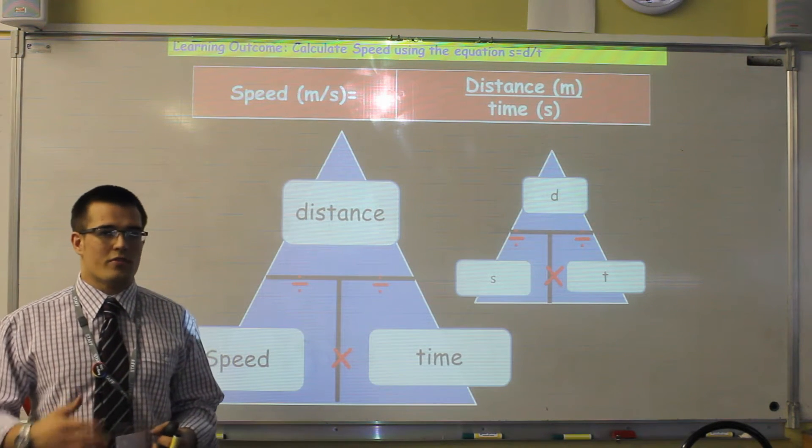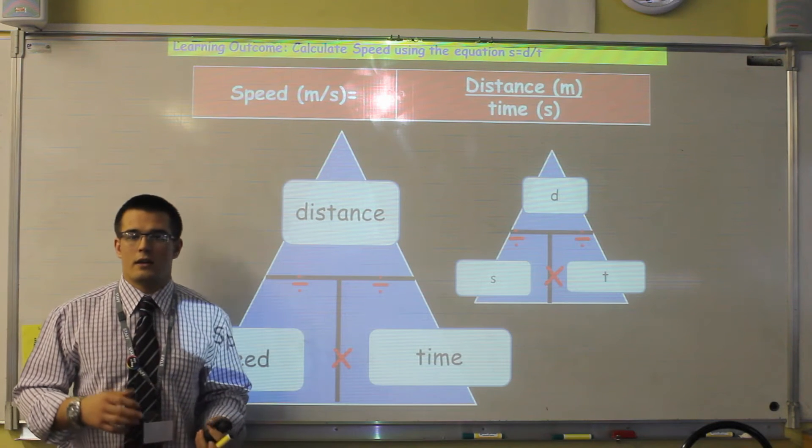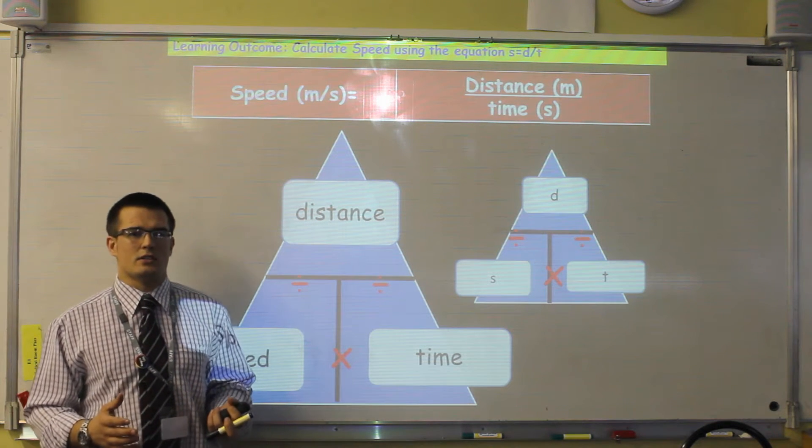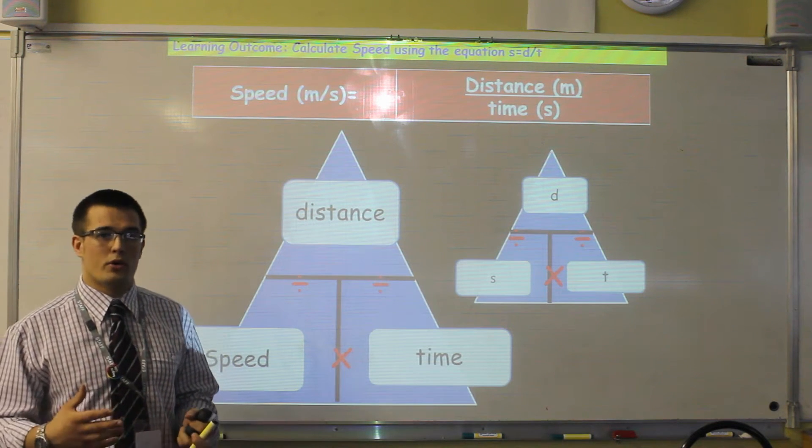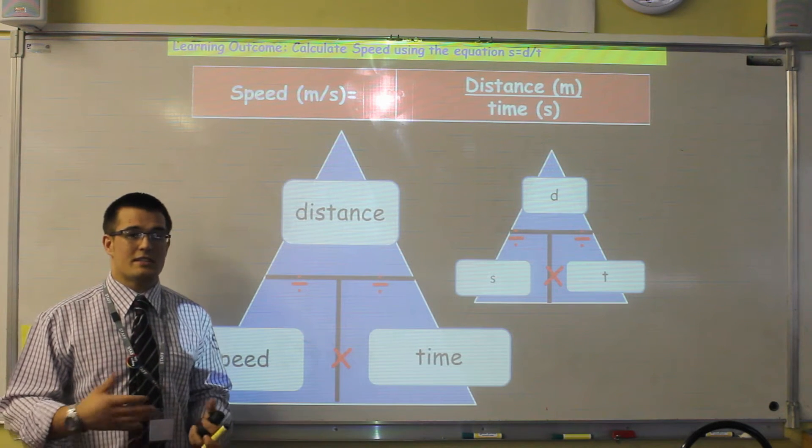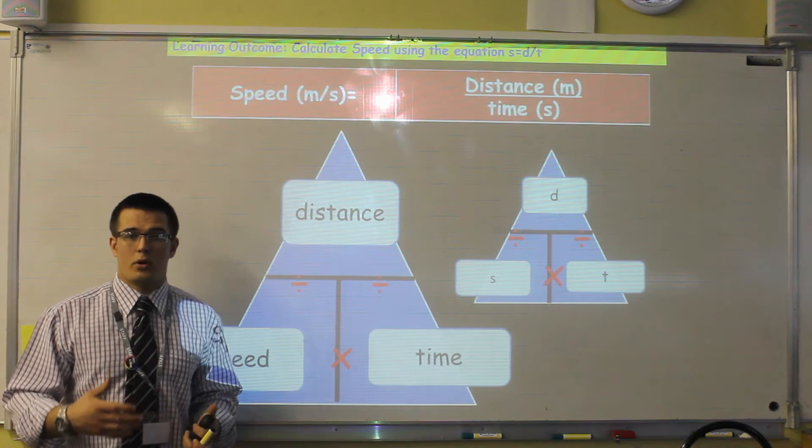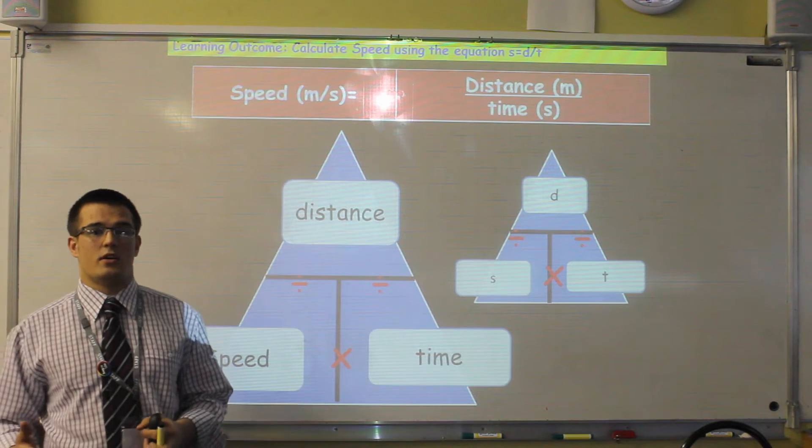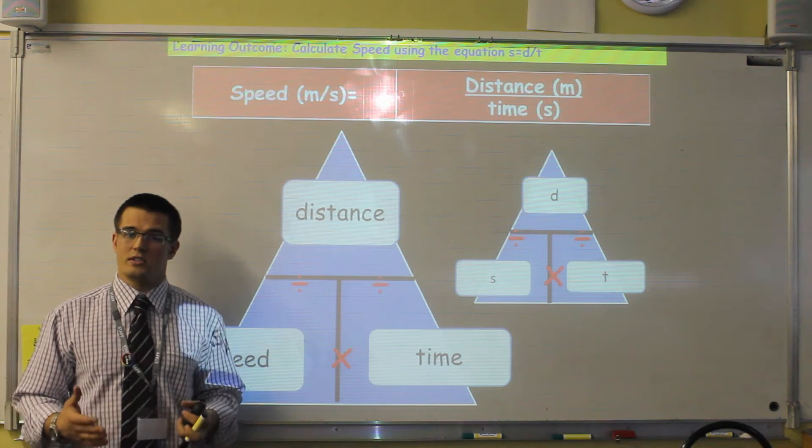Now if you imagine driving in your car, you'll be familiar with miles per hour. Now if you think about that for a second, we've got miles per hour. Miles is a distance. Per means divided by, and hour is a unit of time. And that is how we define speed.